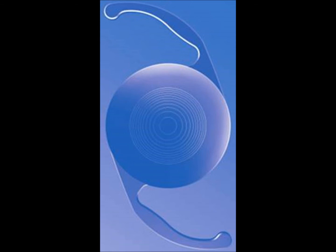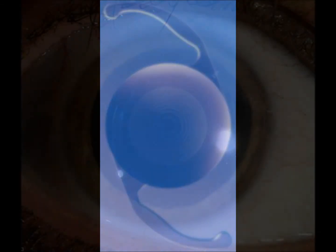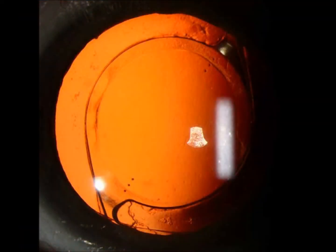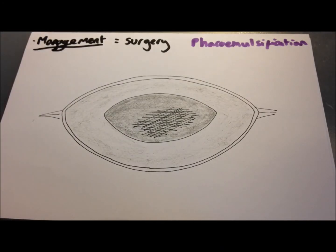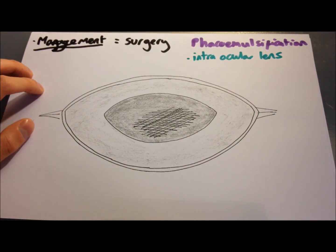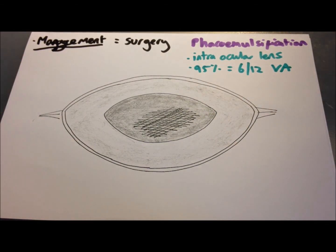The intraocular lens is a foldable device. You insert it into the capsule and it folds out, replacing the natural lens. Here's what one looks like in the eye, and here with the red reflex visible behind it. This procedure has great results — if you have no other eye problems, 95% of patients will achieve 6/12 best corrected vision, making a significant difference from the poor vision caused by the cataract.